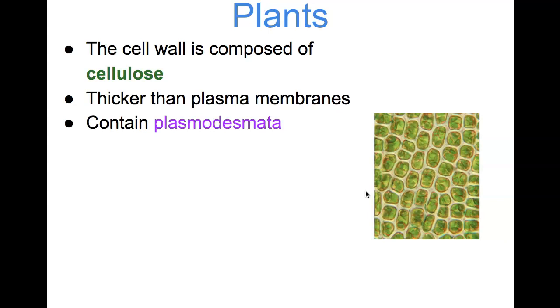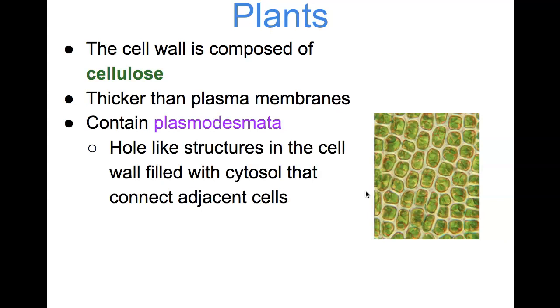The plasmodesmata are going to be hole-like structures in the cell wall that are going to be filled with cytosol, and they're going to be used to connect adjacent cells. It's ultimately going to be these plasmodesmata that are going to allow for things to move between plant cell to plant cell. Otherwise, if you didn't have those channels, things such as water, nutrients, minerals would not be able to pass in and out to other cells because that cell wall is so thick and rigid in structure.